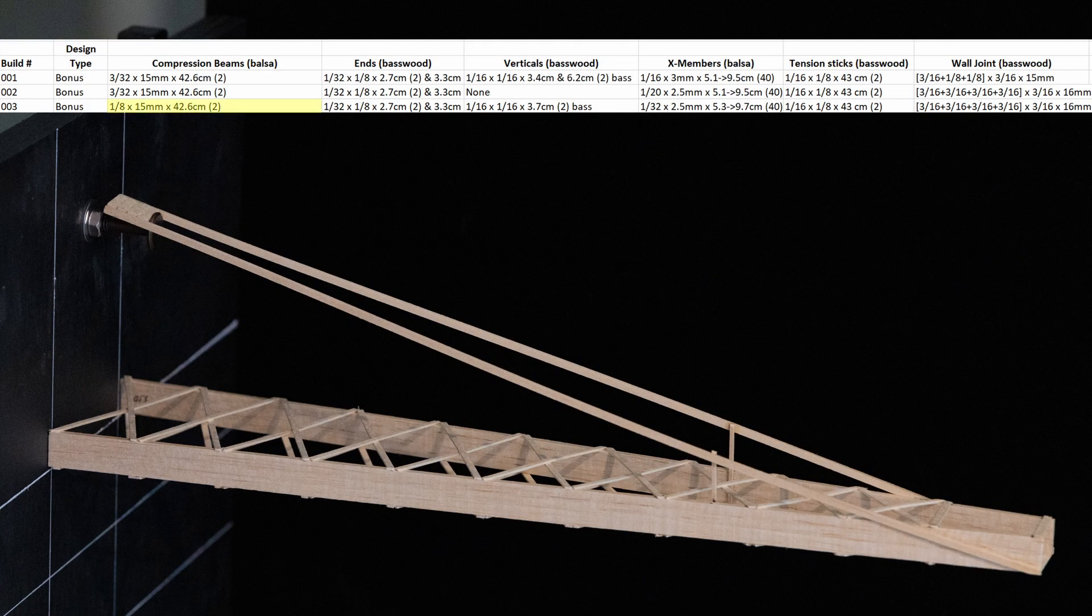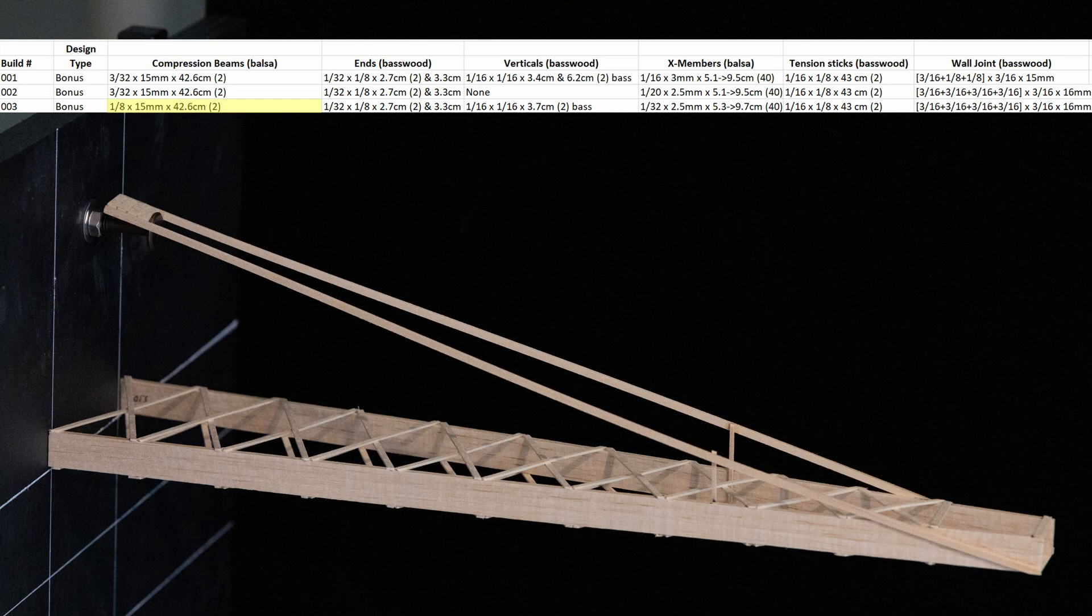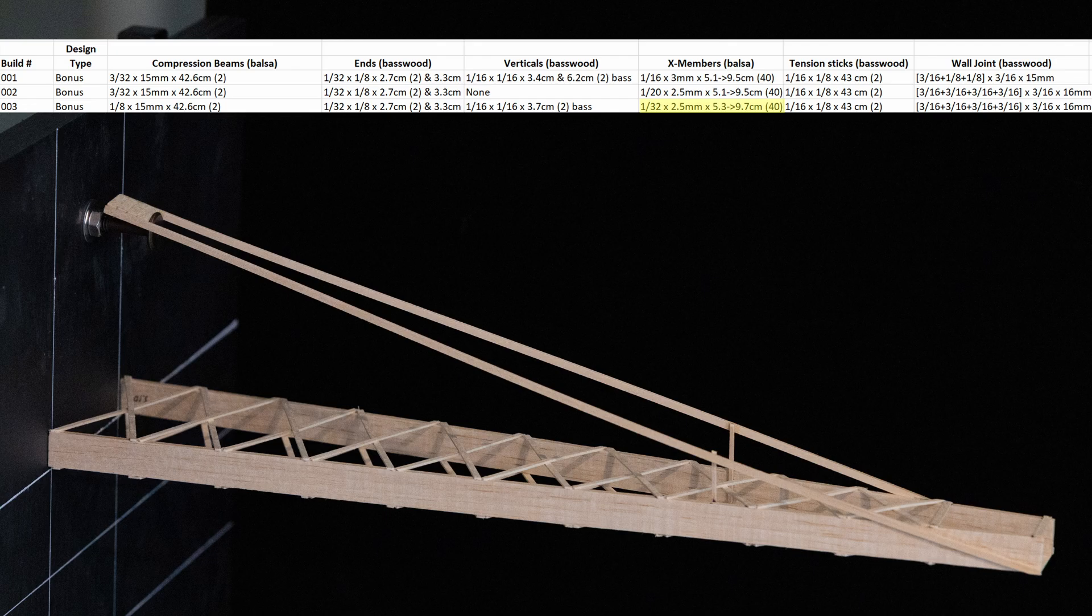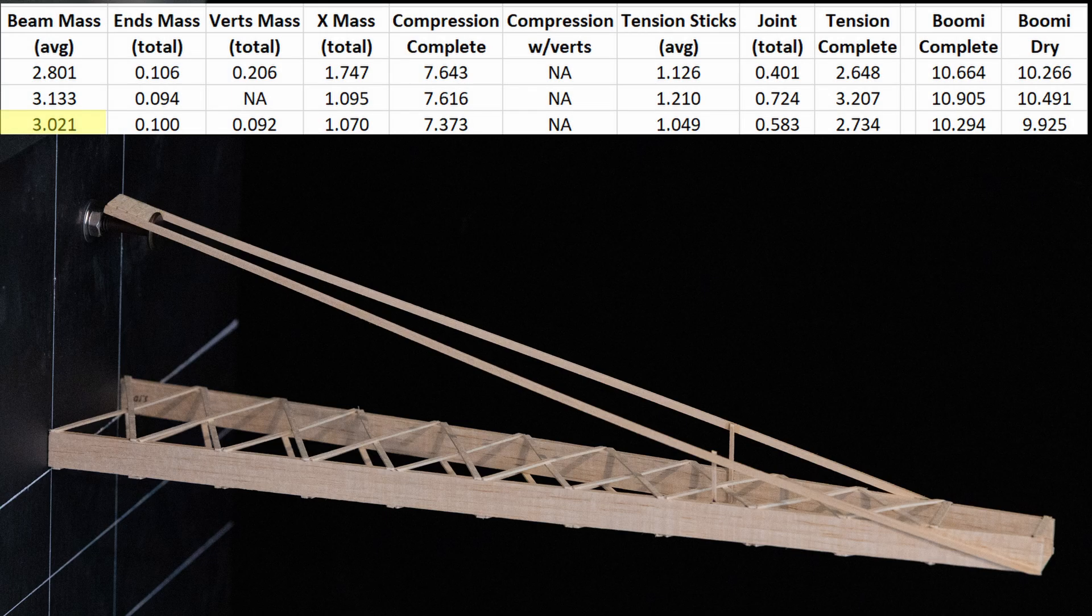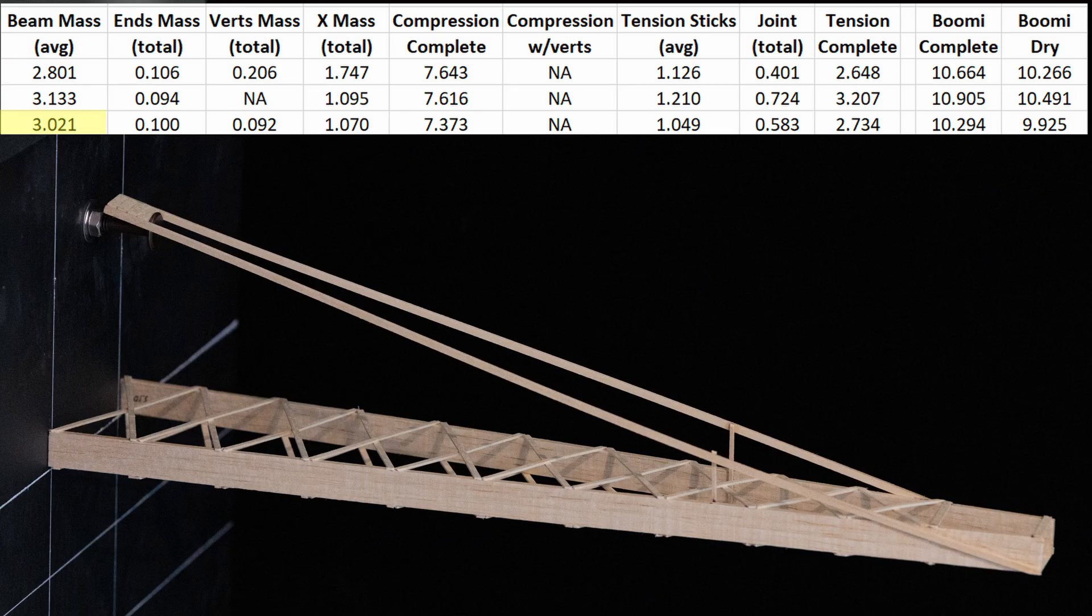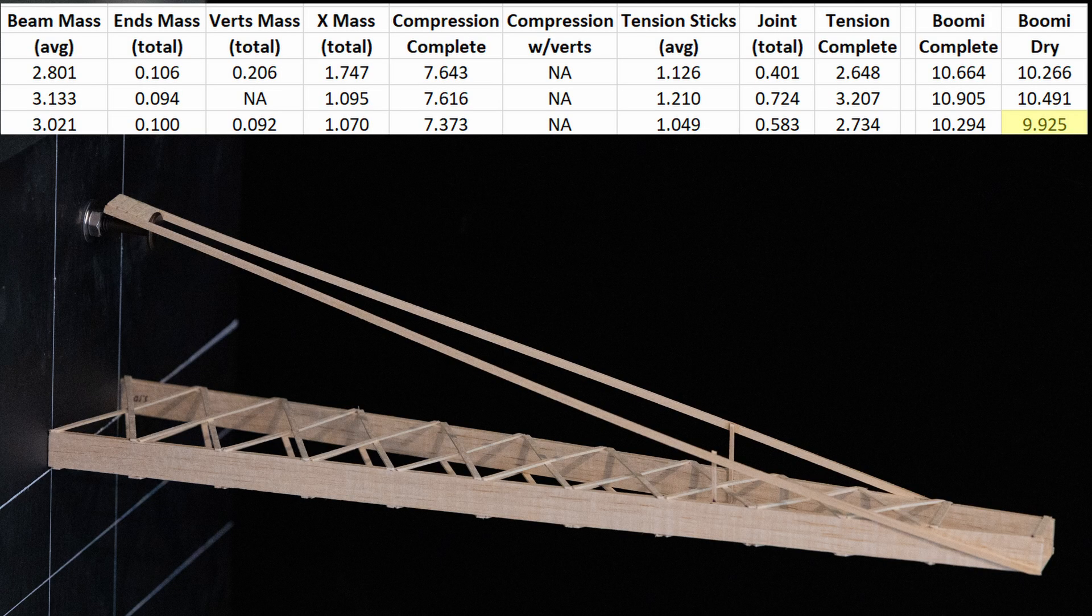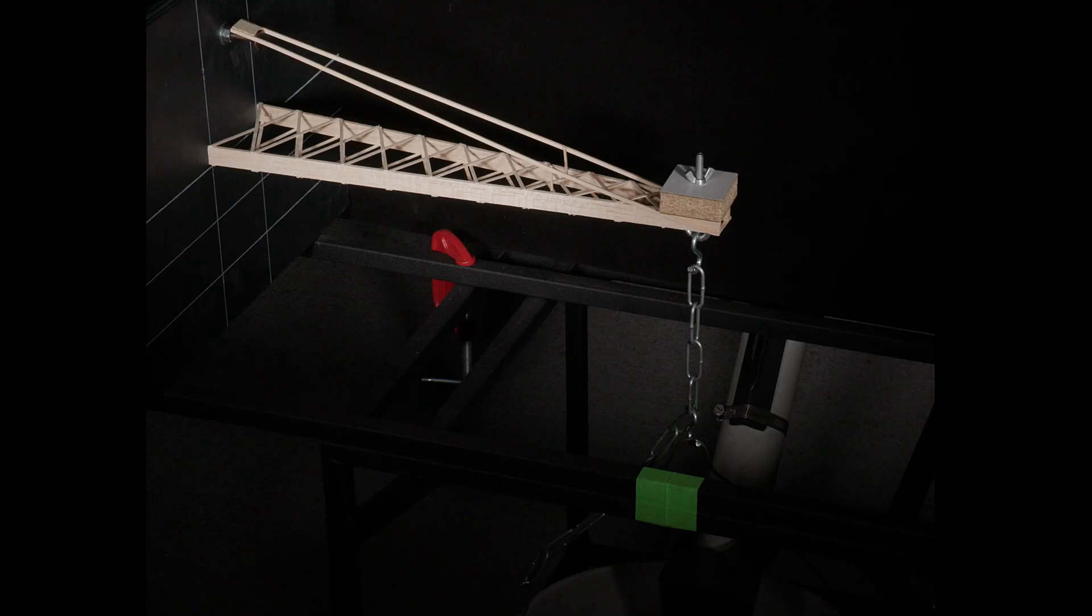This is my next attempt and the major design change here is that I've decided to try compression beams that are made from 1/8 sheet balsa instead of 3/32. I've also added back two of the vertical sticks to help with the bending. I decided to move to 1/32 sheet balsa for the cross members as that hasn't been a mode of failure yet. The mass of the compression beams are slightly less than before, but I'm hoping the increase in size and the vertical helpers will help make the whole system stronger. The final dry mass was 9.925 grams, so very much in line with my 10 gram target. If this holds all 15 kg, it would be a very competitive boomy this season.